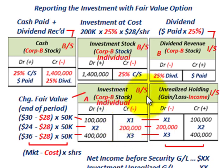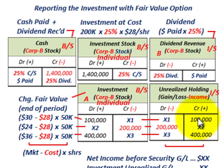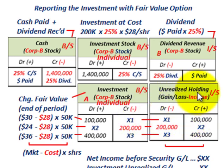Tied into the investment account is the unrealized holding gain or loss on the income statement. For year one, we had that $100,000 increase in our investment, so the unrealized holding gain is credited by $100,000. For year two with the $200,000 reduction in our investment account, we had an unrealized holding loss of $200,000. For year three, the investment account increased by $400,000, so we credit our unrealized holding gain for $400,000.